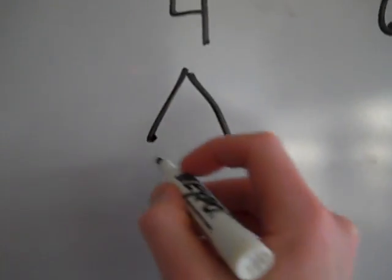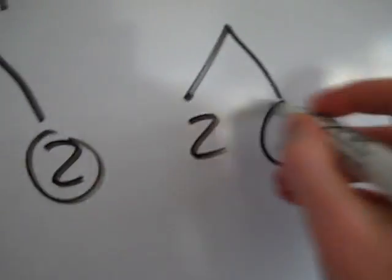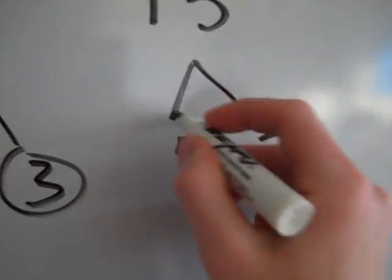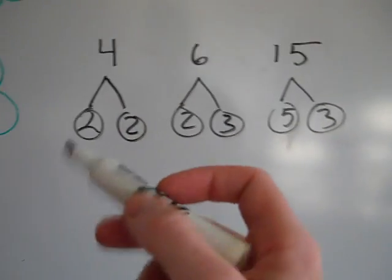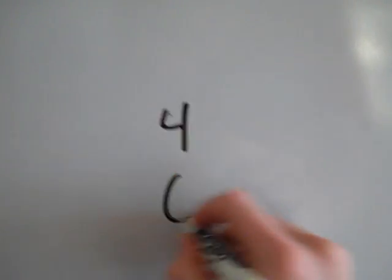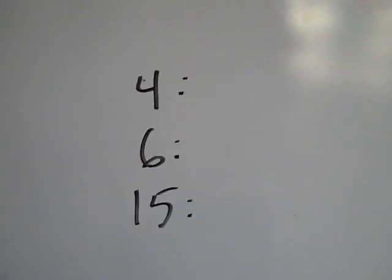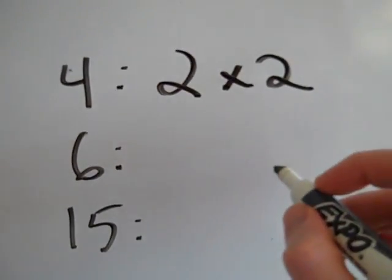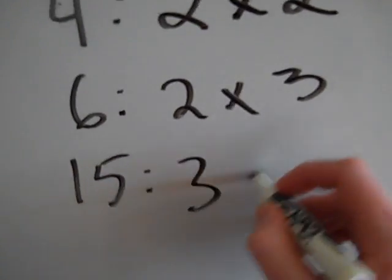Starting with 4 — I'll do my factor tree: 4 gets broken into 2 and 2, those are both prime. 6 gets broken into 2 times 3, those are both prime. And 15 gets broken into 5 and 3, and those are both prime. Once you finish the factor trees, list the numbers on top of each other — 4, 6, 15 — and list their prime factorizations right next to them. So 4 is 2 times 2, 6 is 2 times 3, and 15 is 3 times 5.